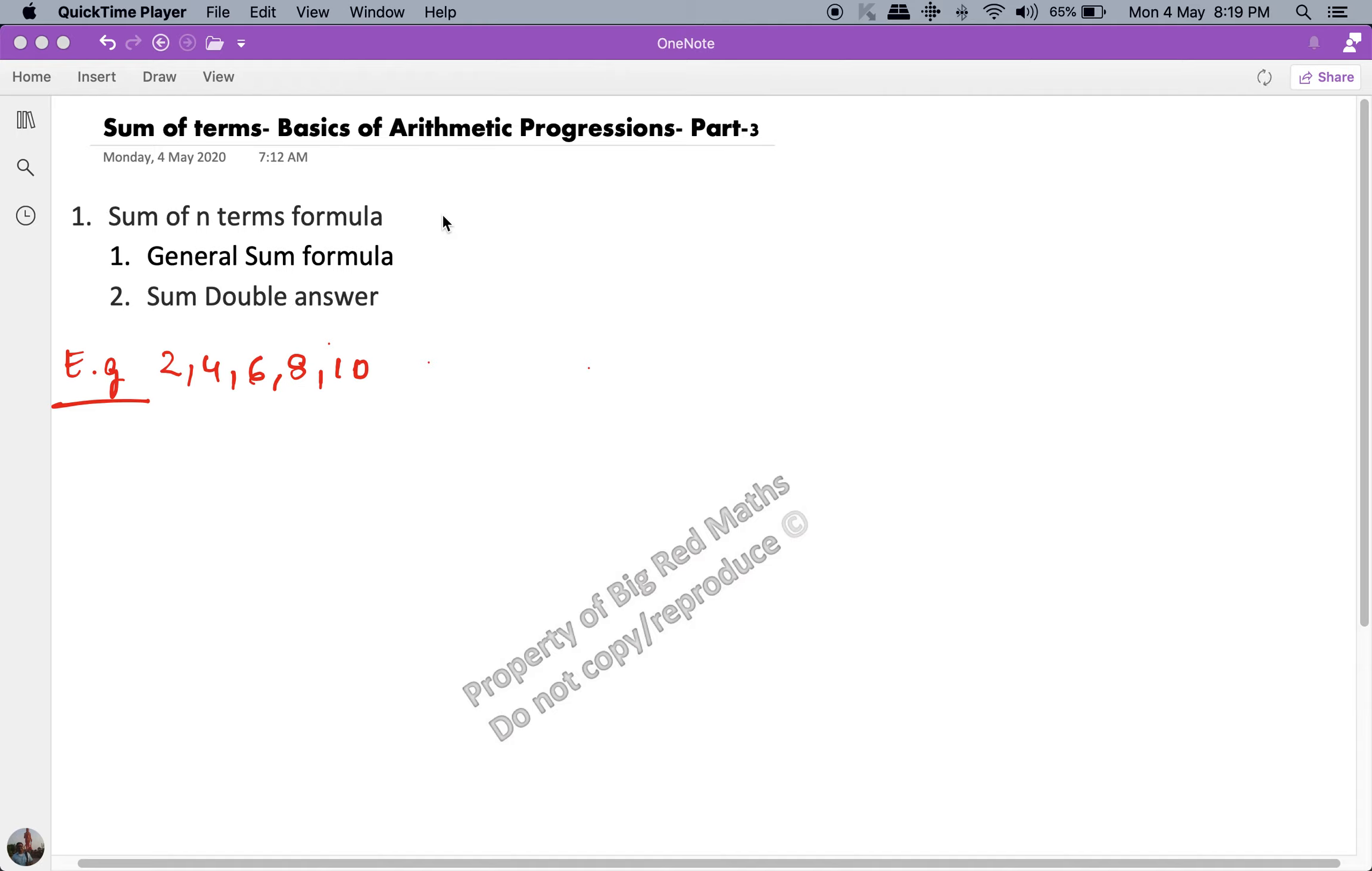Hello friends, welcome to another theory piece of arithmetic progressions. As always, I like to emphasize the weightage of this chapter in class 10th final examinations. Algebra is for 20 marks, and arithmetic progressions is for approximately 7 marks.